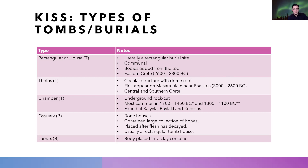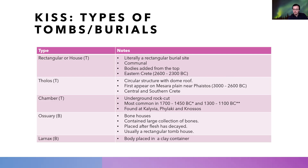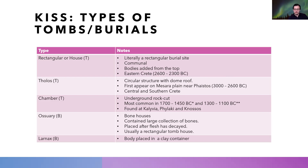The next type is the chamber tomb — an underground rock-cut tomb, literally carved into the ground. This type is most common in 1700 to 1450 BC and again in 1300 to 1100 BC, so there is a gap in their appearance that can be explained by changes in society and how they wanted to bury their dead. These are found at Kalivia, Tylissos, and Knossos.